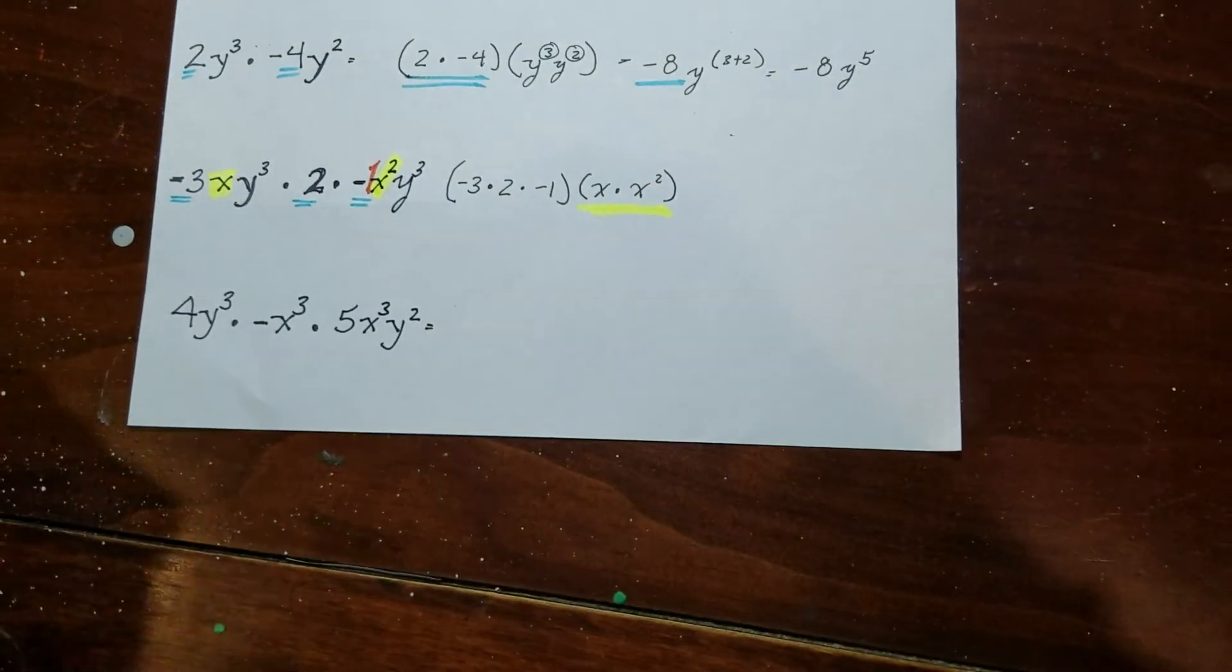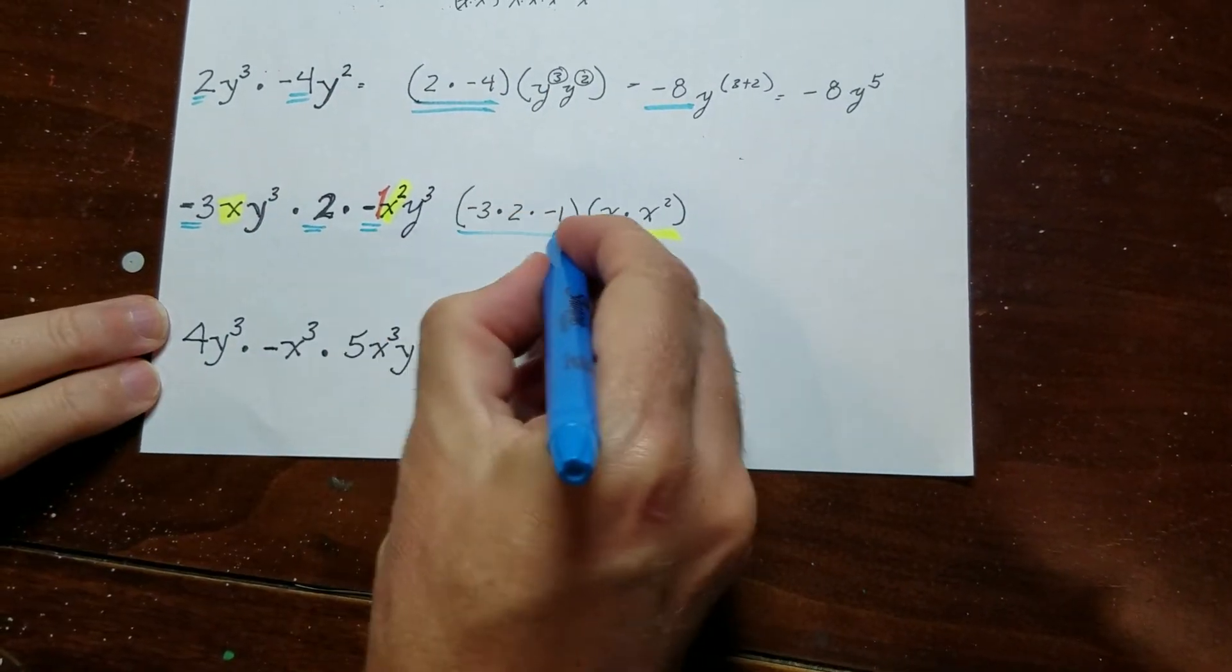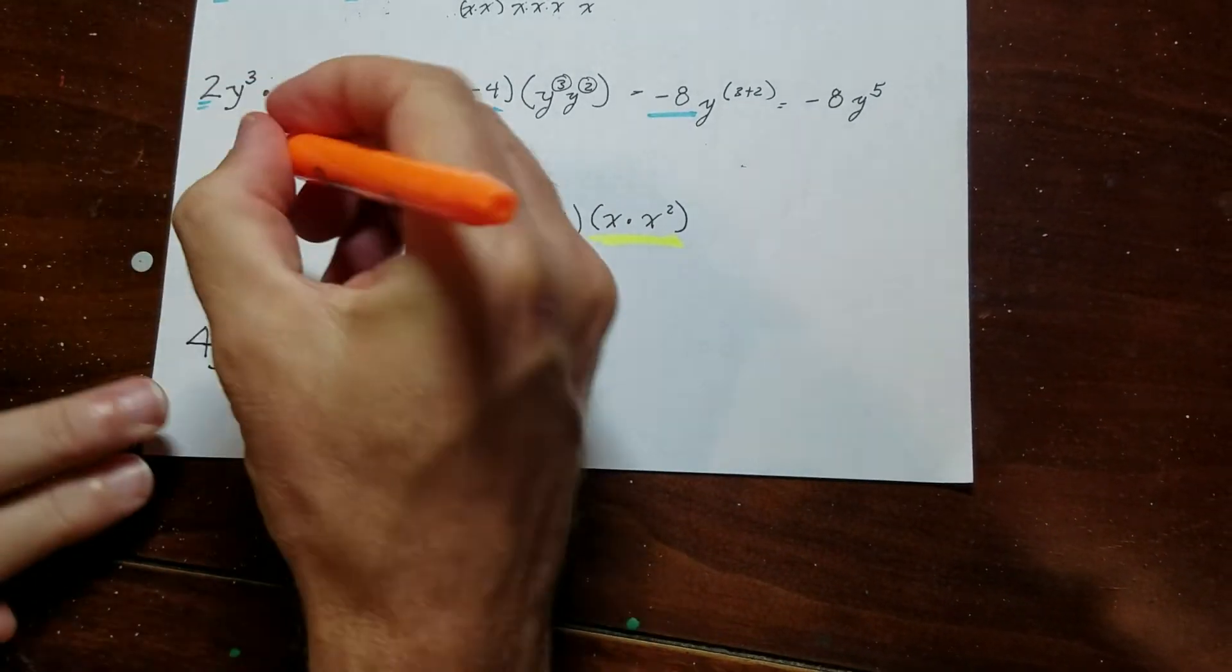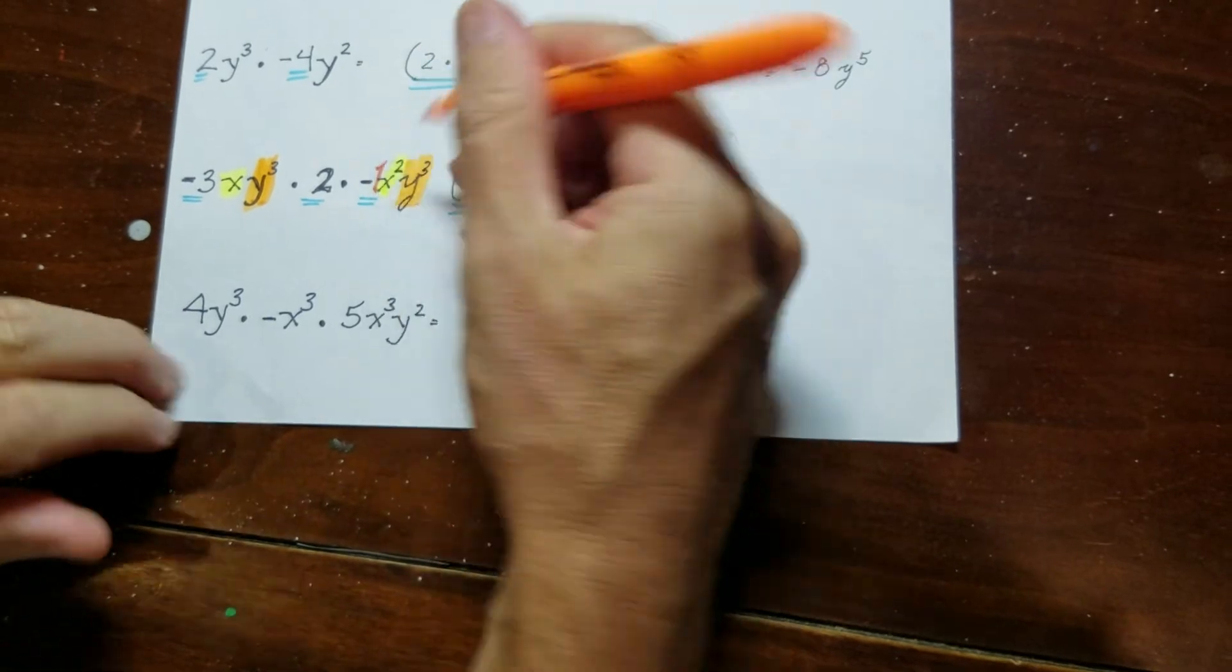So let's see. I've got my x terms. I've got my coefficients. And then now I'm going to do my y's. So it looks like I've got three of them here and three of them here.